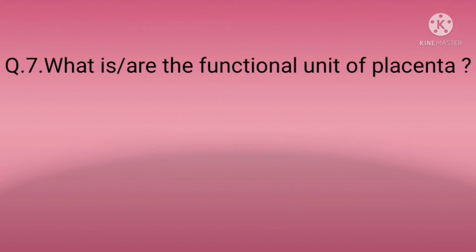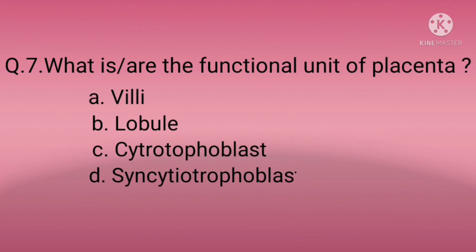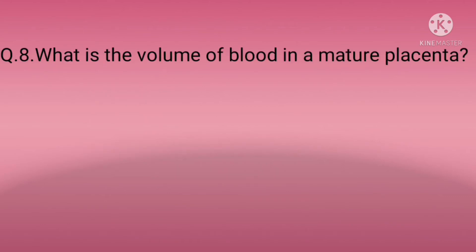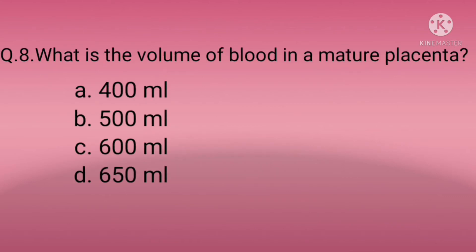Question seven: What is the functional unit of the placenta? Option A: Villi, Option B: Lobule, Option C: Cytotrophoblast, Option D: Syncytiotrophoblast. The correct option is A — villi. Villi is the functional unit of the placenta.